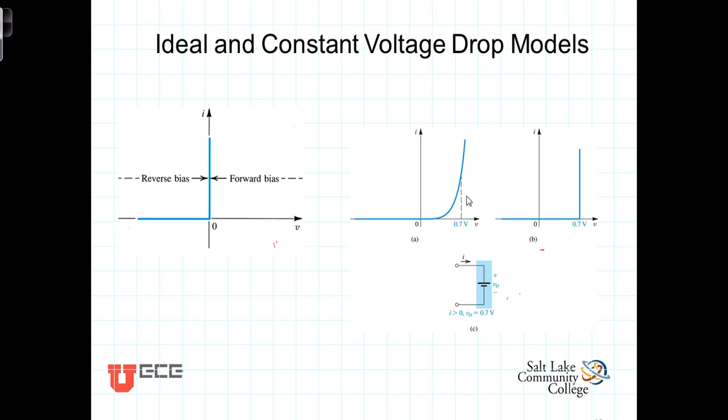Presumably, it'll be at the bias point. In this case, we've chosen 7 tenths of a volt to be that constant voltage. So we'd model the diode as a constant voltage drop of 7 tenths of a volt.